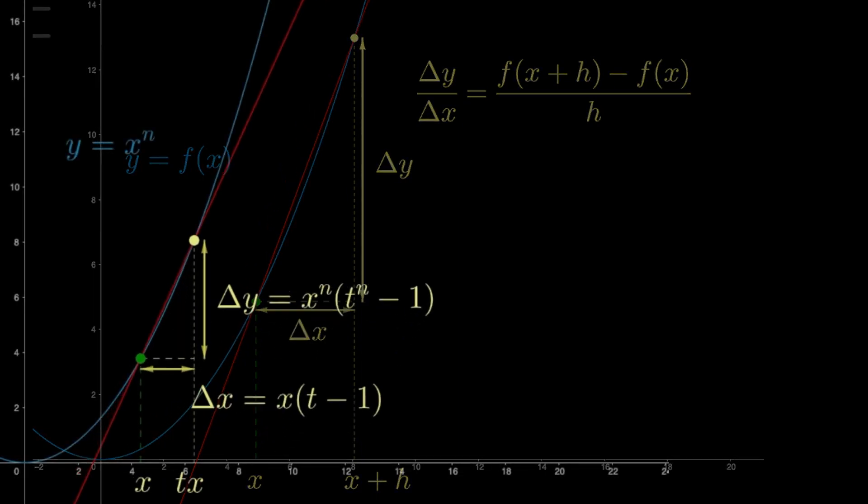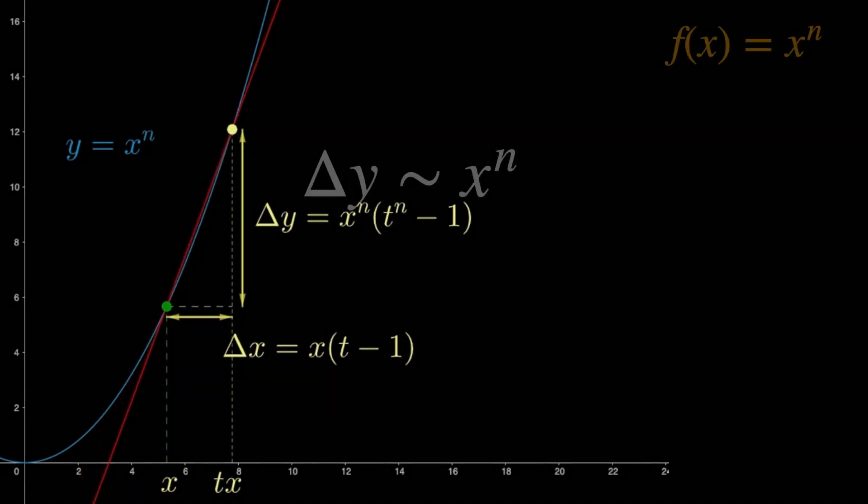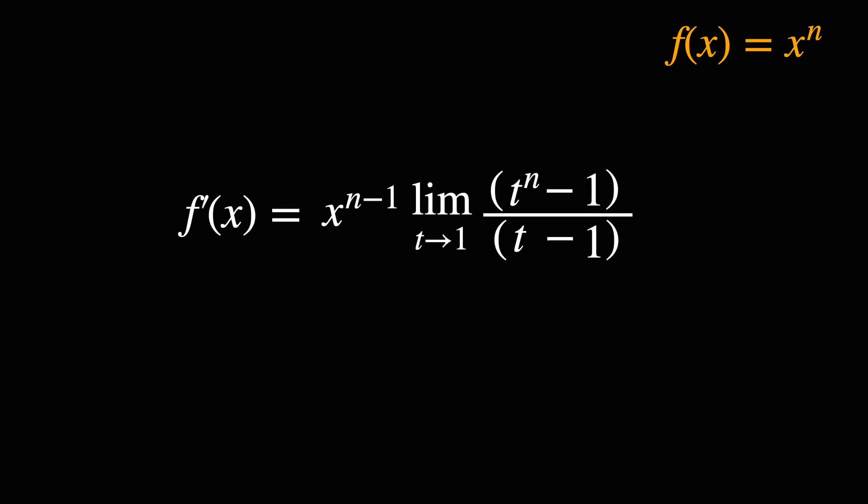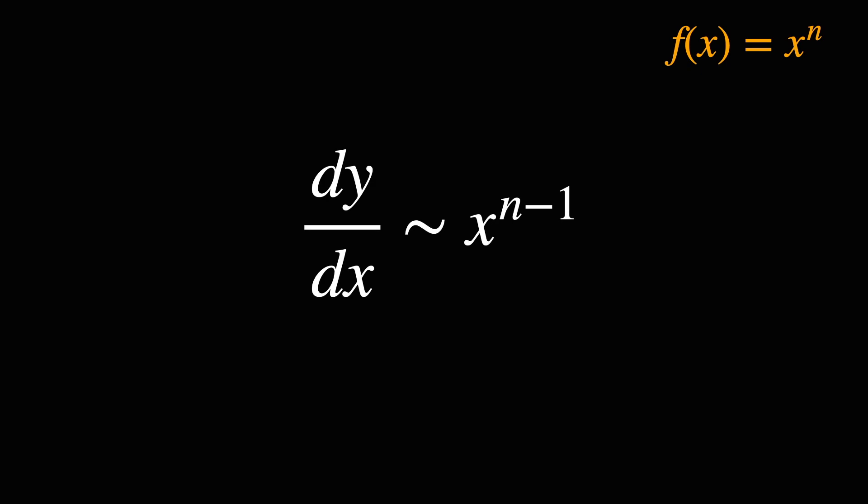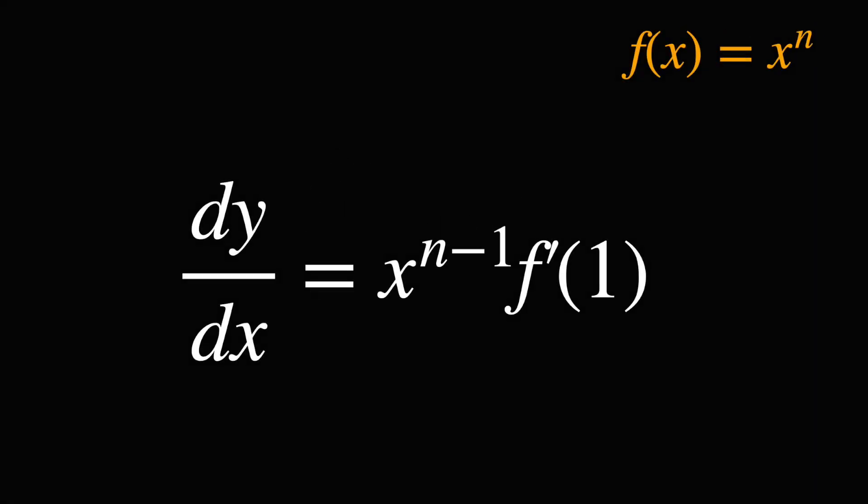For power functions, the rise is always proportional to x to the n, and the run is proportional to x. So if the slope is rise over run, it is immediately obvious that the slope is proportional to x to the n minus 1. We showed that this was true even after you take the limit. So the derivative is proportional to x to the n minus 1, with the proportionality constant being f prime of 1. That's true for any real non-zero power, not just positive integers.